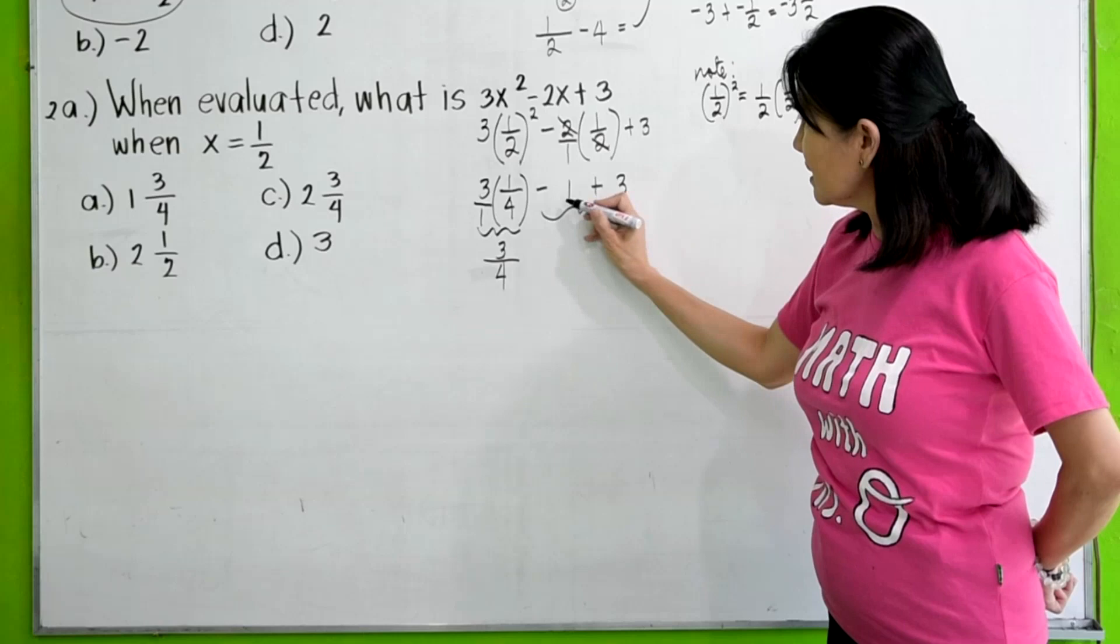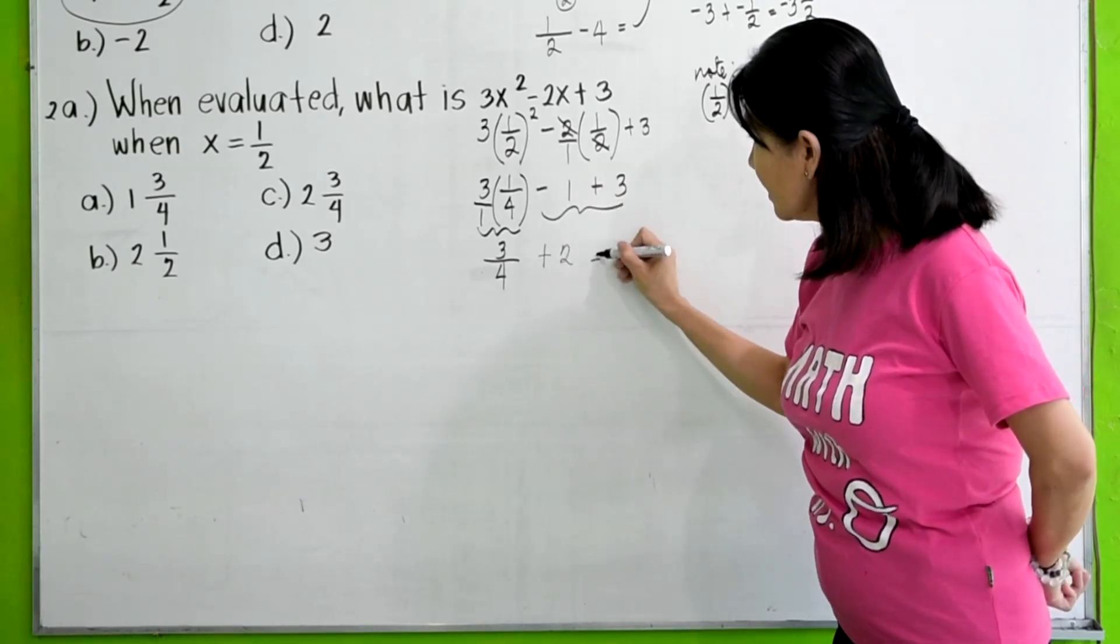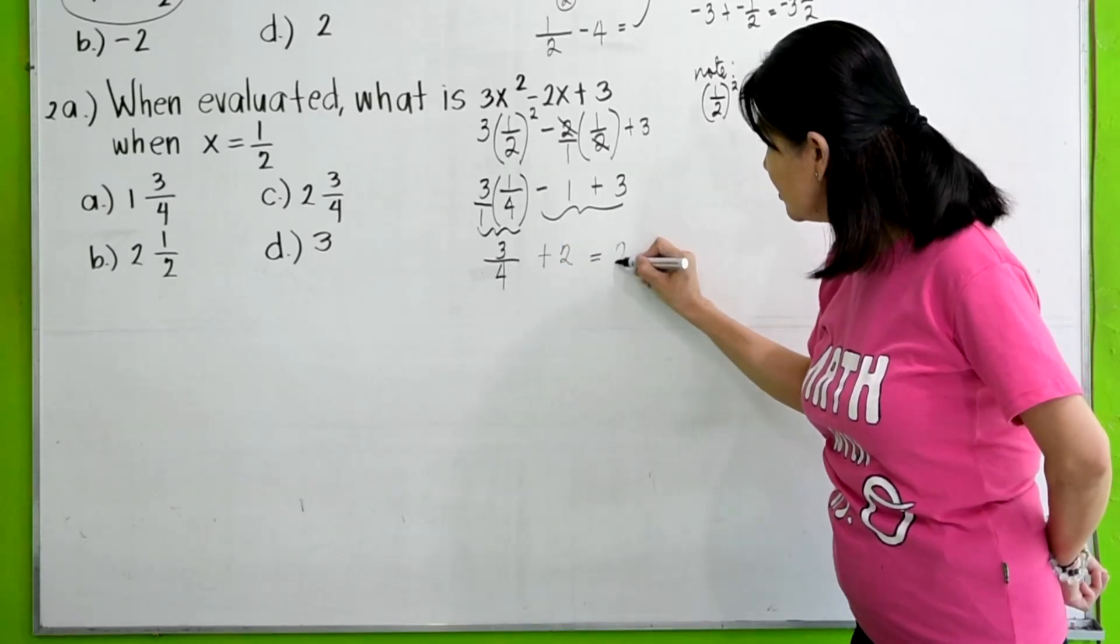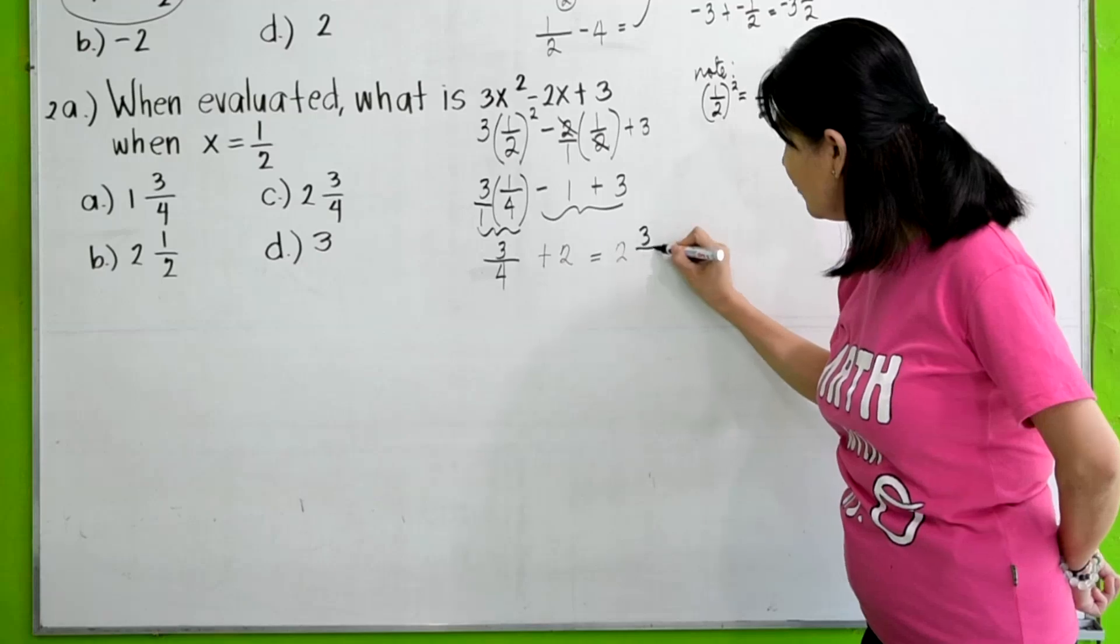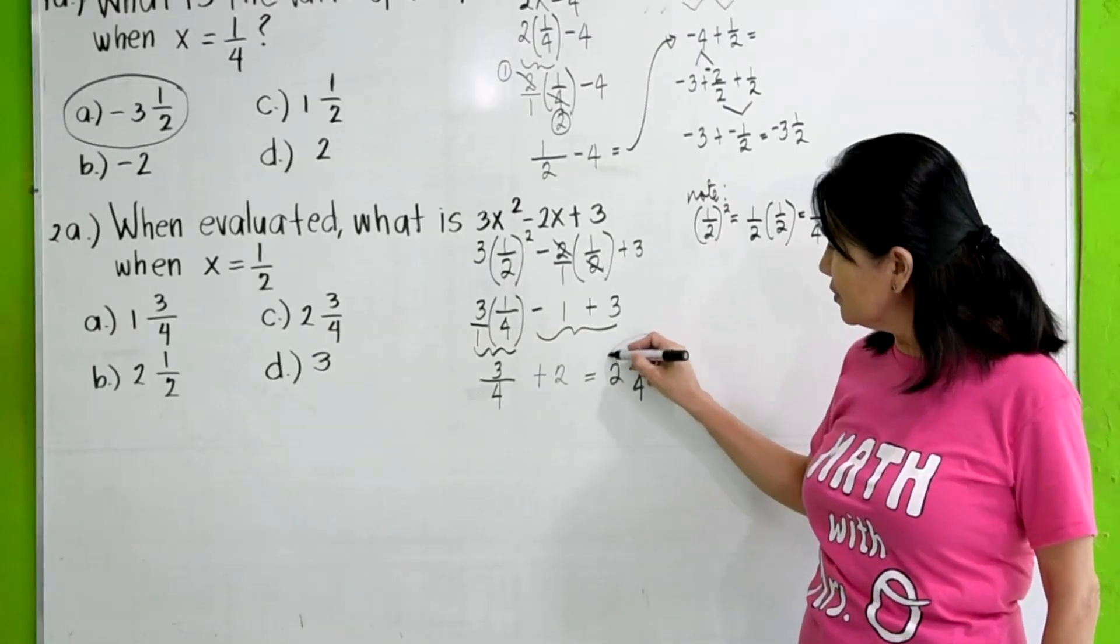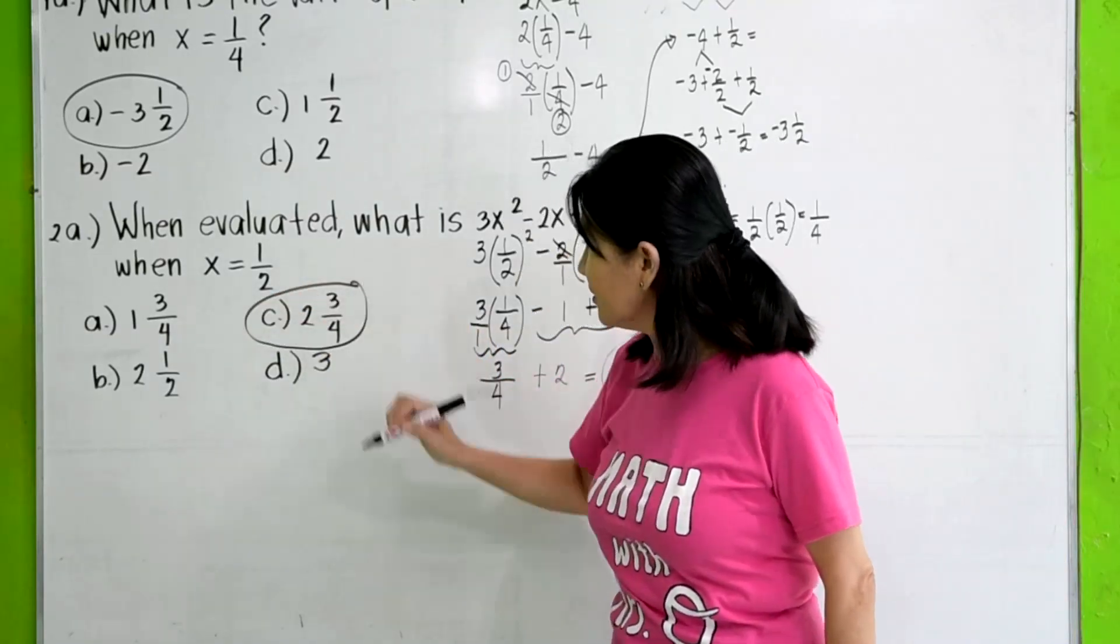3 times 1 is 3 over 1 times 4 is 4, which gives us 3/4. We can add these two because we do not have multiplication anymore. 3 plus negative 1 will give us a positive 2. 2 and 2 plus 3/4 is simply 2 and 3/4. So we have here our answer to be 2 plus 2 and 3/4. So our correct answer is letter C.